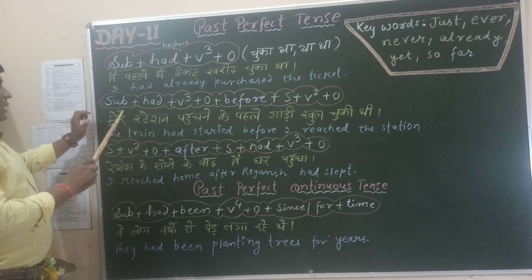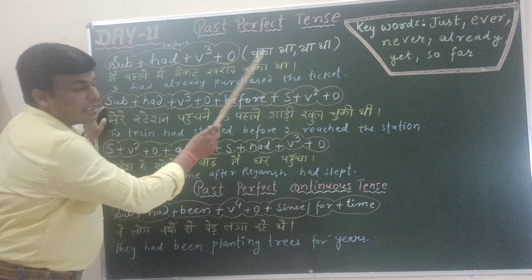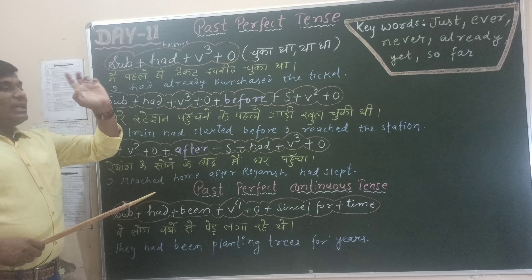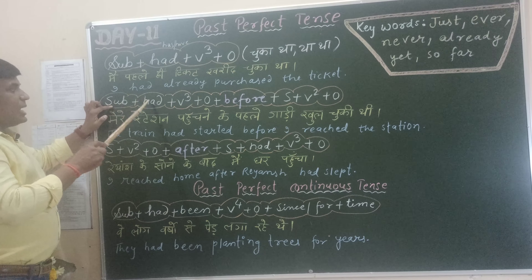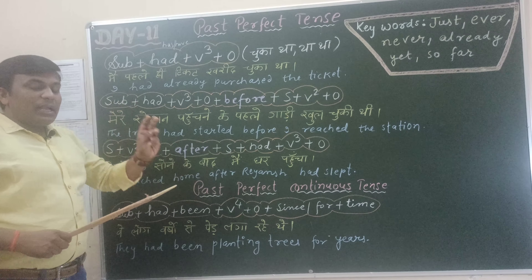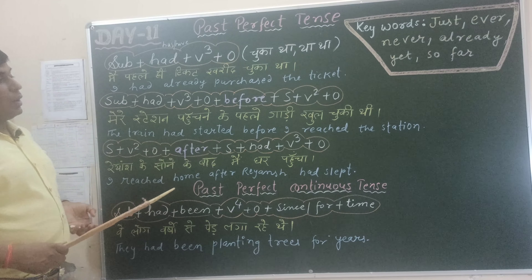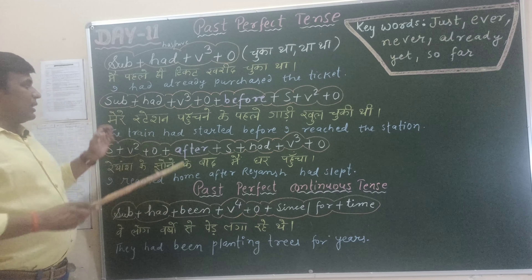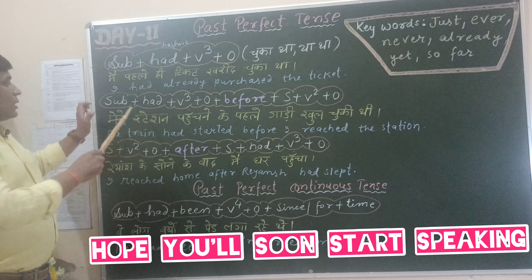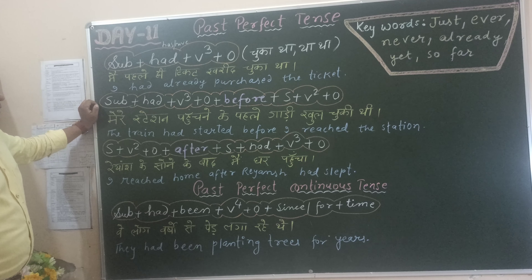उसके बोलने के पहले मैं बोल चुका था — I had spoken before he spoke. उसके यहाँ आने के पहले मैं दिल्ली जा चुका था — I had gone to Delhi before he came here. मेरे दिल्ली पहुँचने के पहले train बंद हो चुकी थी — the trains had stopped due to lockdown before I reached Delhi.